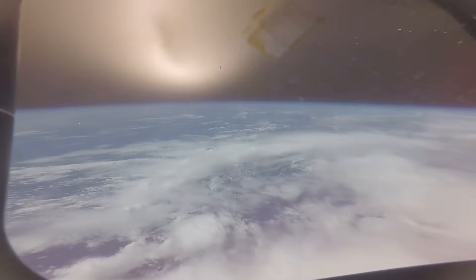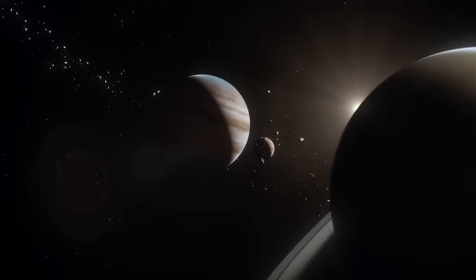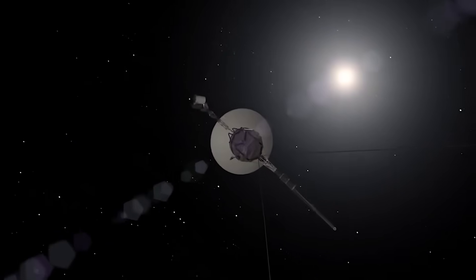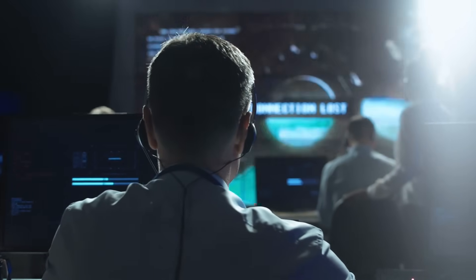Voyager 1 is now measuring distance in a way no human artifact ever has. Not kilometers, not miles, not astronomical units, but signal time. A metric that only becomes meaningful when a spacecraft has traveled so far that the very fabric of communication must adjust.